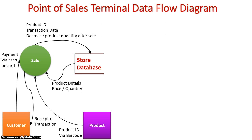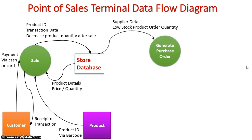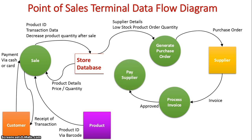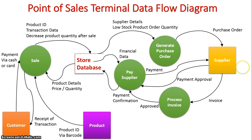If any of the products go below a certain quota during the transaction, we then need to order new products. We first generate our purchase order by getting our supplier details up. This is then sent to the actual supplier, who looks at the order and sends an invoice back to the store. The store processes the invoice, approves it, and then pays the supplier. Financial data is retrieved from the store database, and once the supplier receives payment, they approve it and the confirmation is sent into the database.